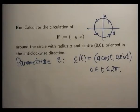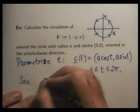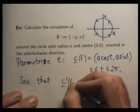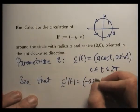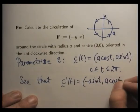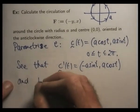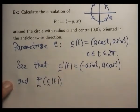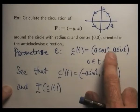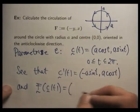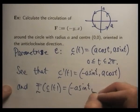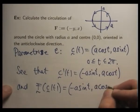It's a familiar story now. Calculate the derivative of our parametrization. Evaluate the vector field along the parametrization and take the dot product. So here's the derivative c'(t) = (-a sin t, a cos t). And F along our parametrization, what's that going to be? Well, x equals a cos t, y equals a sin t. Sub them in here. We're going to get something like (-a sin t, a cos t).